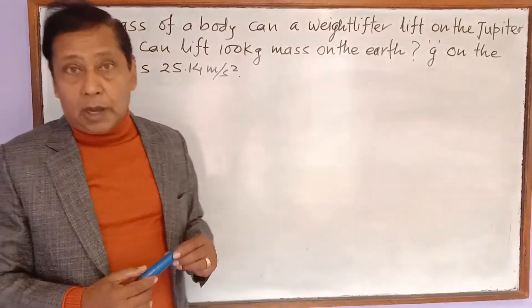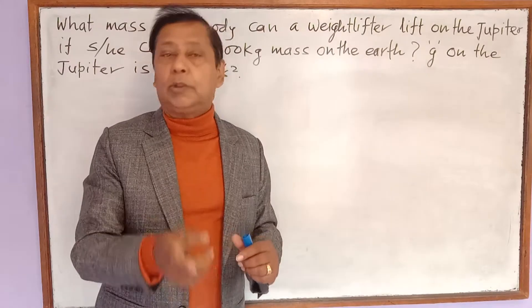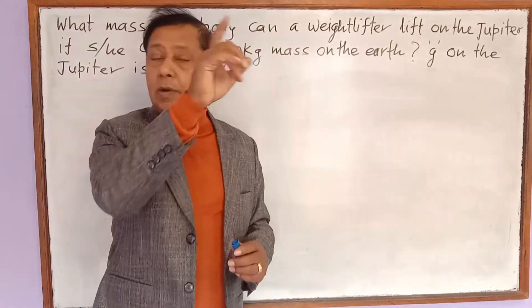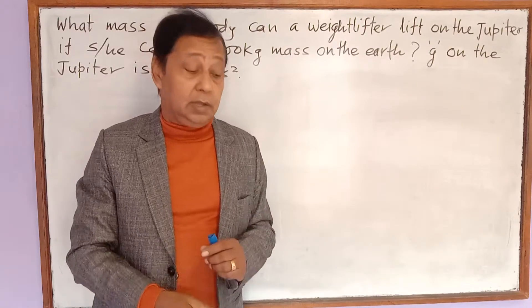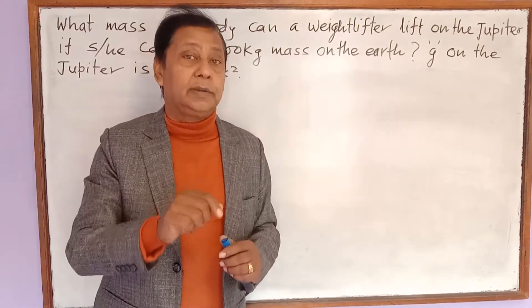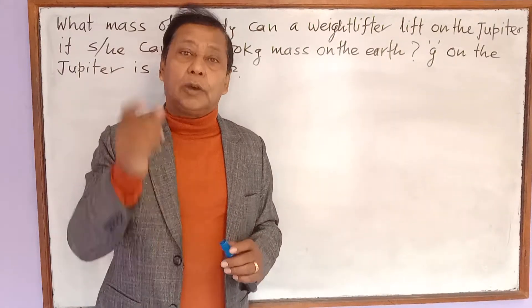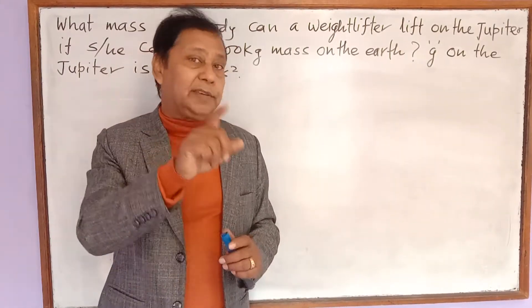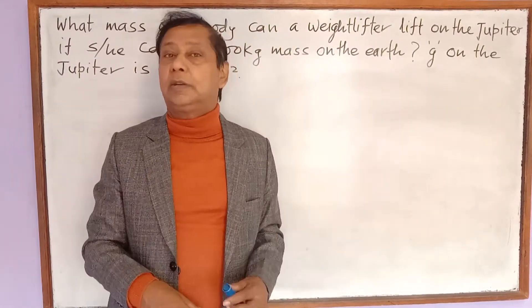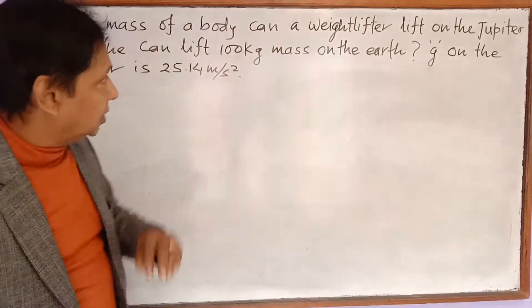This is a simple numerical problem. If we can lift 100 kg on Earth, we will not be able to lift the same 100 kg on Jupiter. The reason is the force required to lift 100 kg on Earth is not equal to the force required to lift 100 kg on Jupiter, because the gravitational force of Jupiter is very much higher than that of Earth.